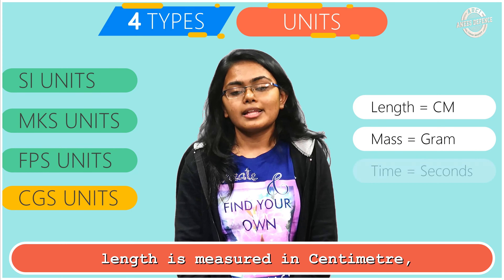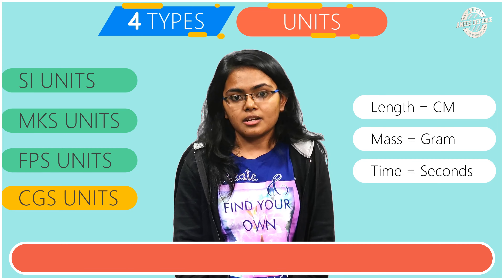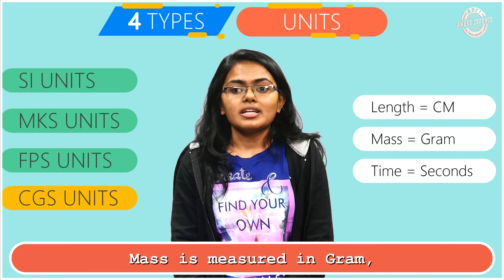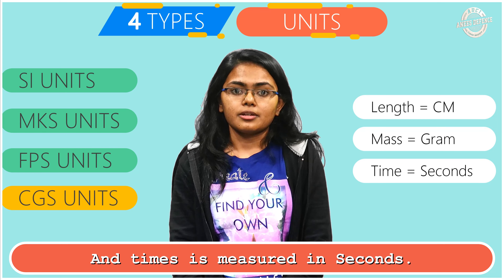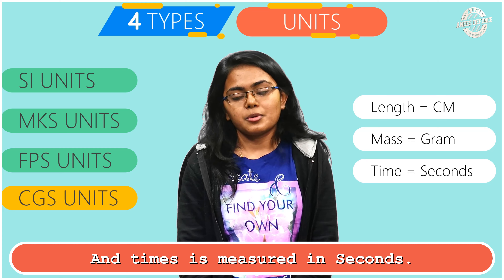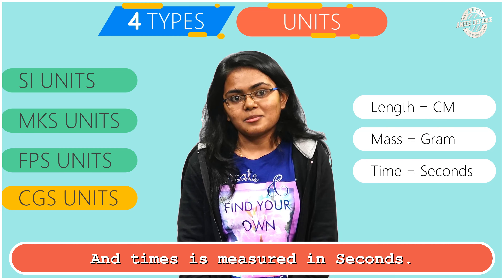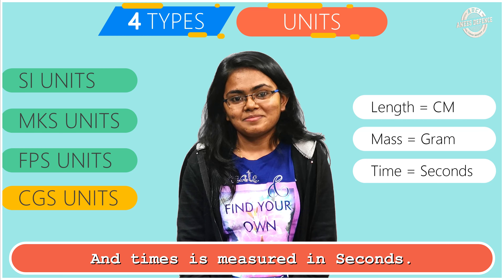In CGS unit, length is measured in centimeters, mass is measured in grams, and time is measured in seconds.